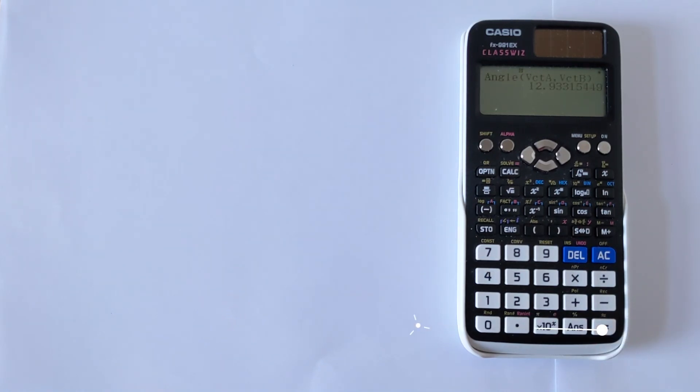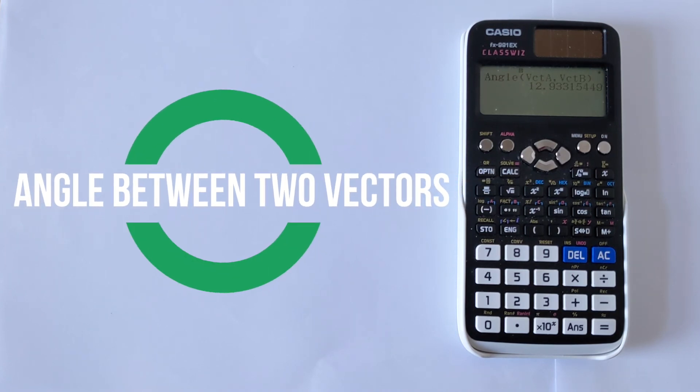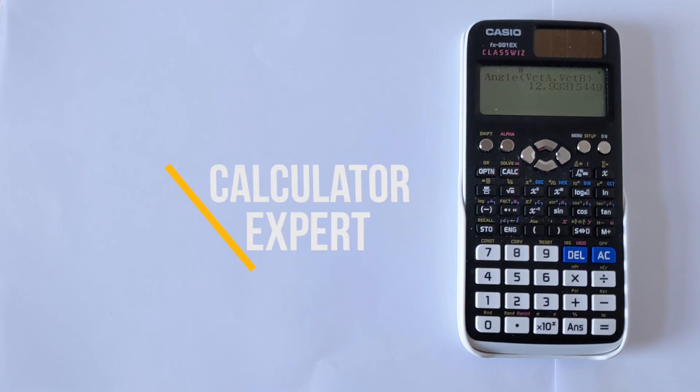You get 12.93, and that is your angle between your two vectors. I hope this video was helpful to you. Please like and subscribe below. Finally, thank you very much for watching.